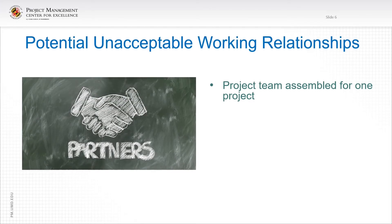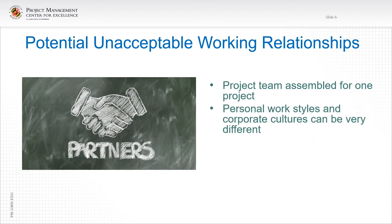The next item to cover is potential unacceptable working relationships. This can occasionally happen. The project team is generally assembled for one project — that's what project management and construction management is about. We put a team together, we accomplish a partnership, and we get started on the project. The personnel, personal work styles, and corporate cultures can be very different between all members: the owner, the architect and engineers, and the contractor.